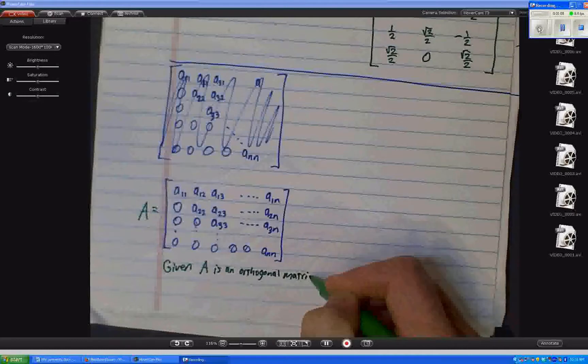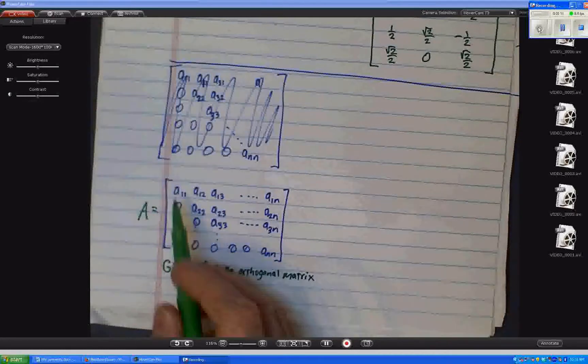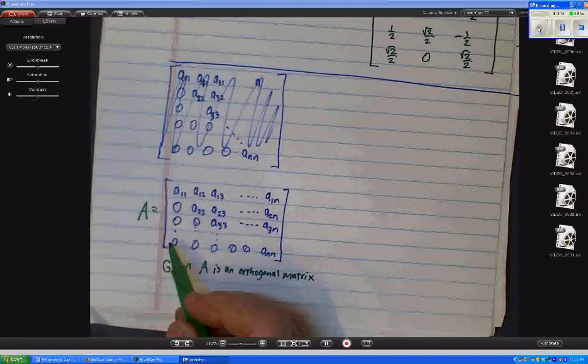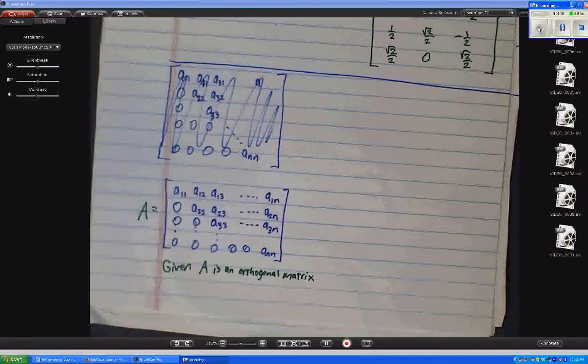So that means two things, right? It means that the columns are unit vectors. If you dot them with themselves, you get 1. And it means if you dot them with each other, you get 0.